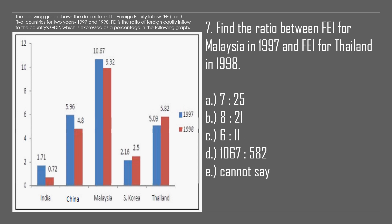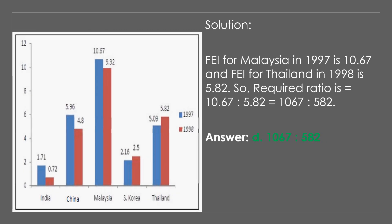Question 7. Find the ratio between FEI for Malaysia in 1997 and FEI for Thailand in 1998. A. 7:25. B. 8:21. C. 6:11. D. 1067:582. E. Cannot say. The answer is D, 1067:582. Solution: FEI for Malaysia in 1997 is 10.67 and FEI for Thailand in 1998 is 5.82, so the required ratio is 10.67:5.82, or 1067:582.